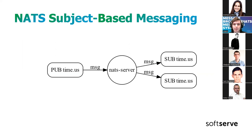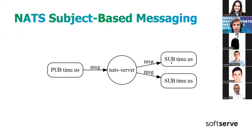NATS uses subject-based messaging. A publisher sends messages to the NATS server on a specific subject, and subscribers receive those messages. We have a message and a topic or subject. Using the subject, we communicate with different subscribers since many subscribers can subscribe to different topics. For example, a publisher can publish to a subject like 'time' and all subscribers of that topic will receive the message — just once.